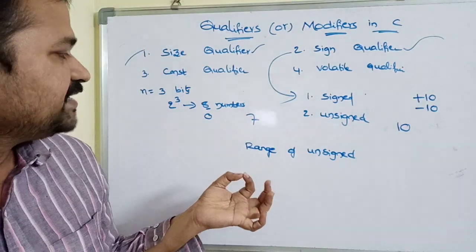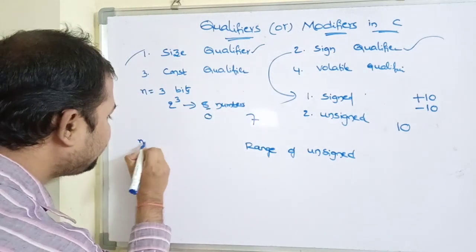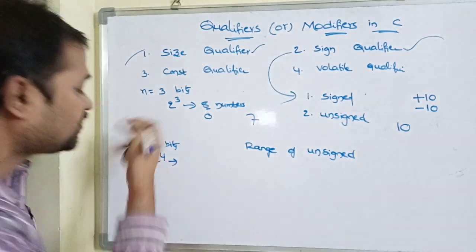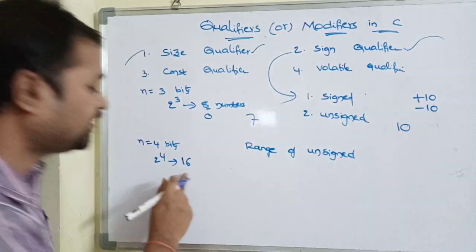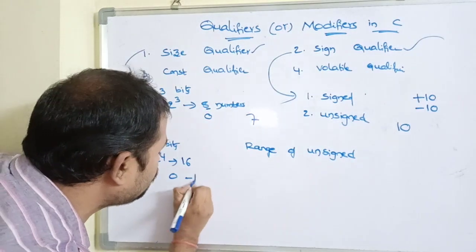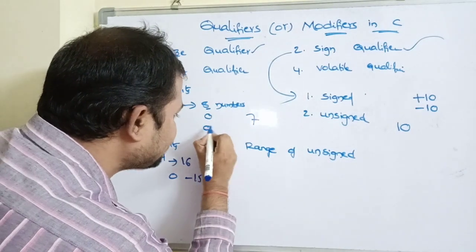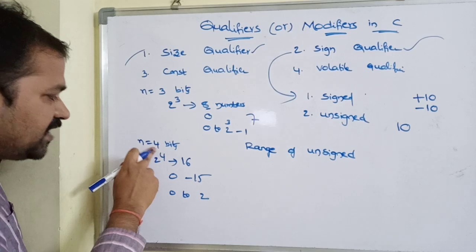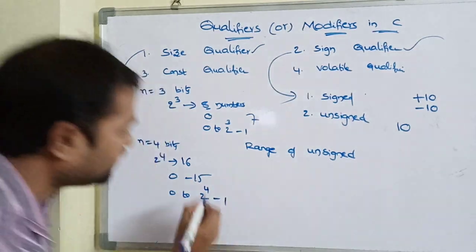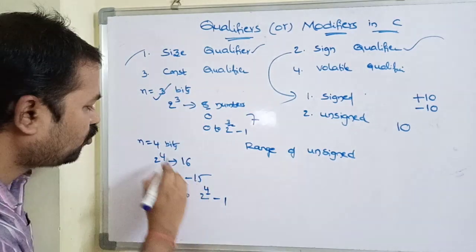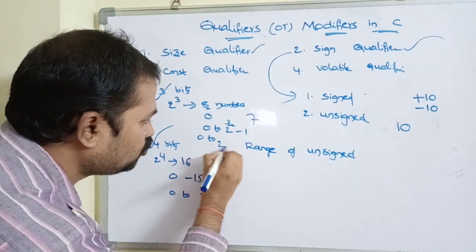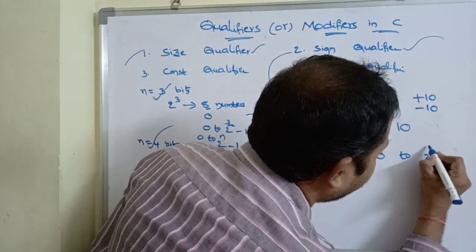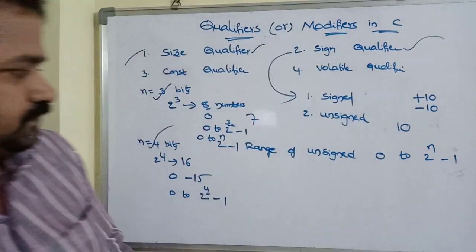Similarly, if n = 4, we can store 2^4 = 16 integer numbers, so from 0 to 15. In general the range of unsigned qualifier is 0 to 2^n − 1.